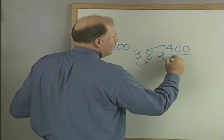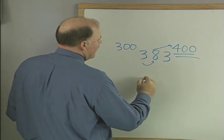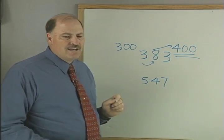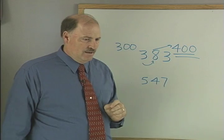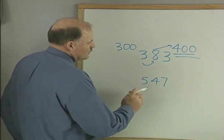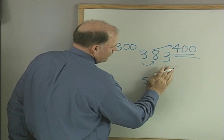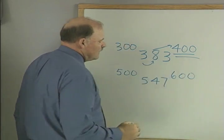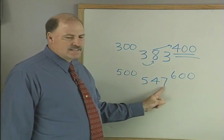Let's try another one: 547 rounded to the nearest hundred. Okay, so what's the closest hundred here? 500. What's one more? Very good, 600. Now, am I gonna look at the seven?